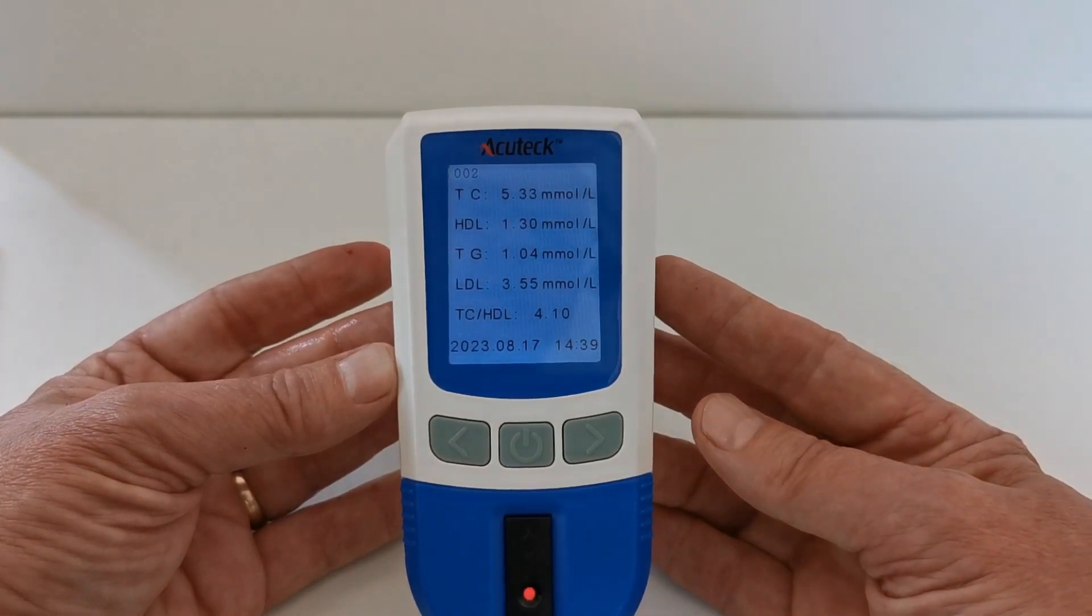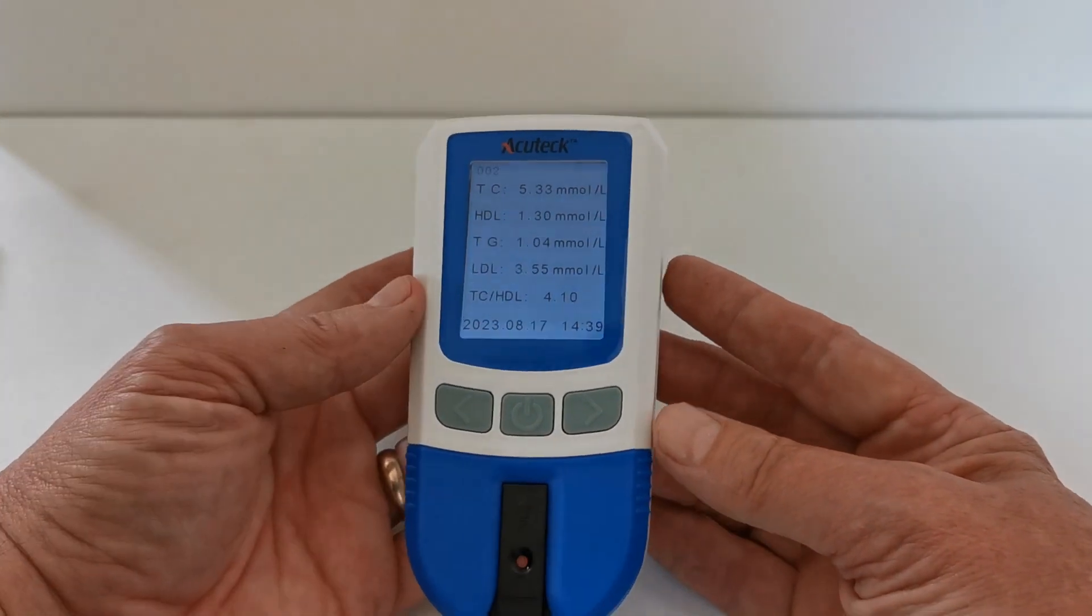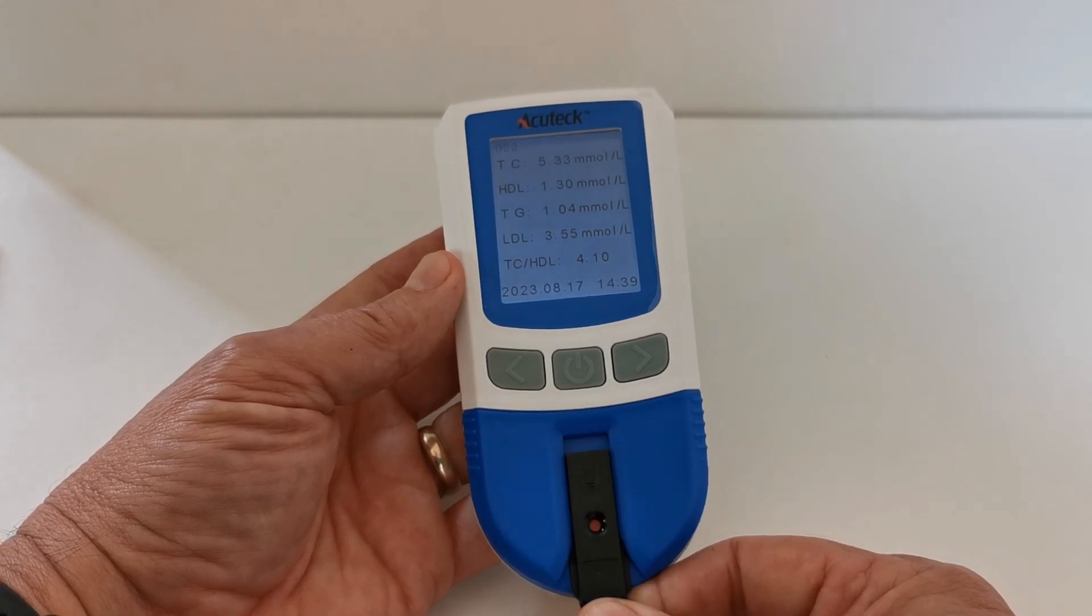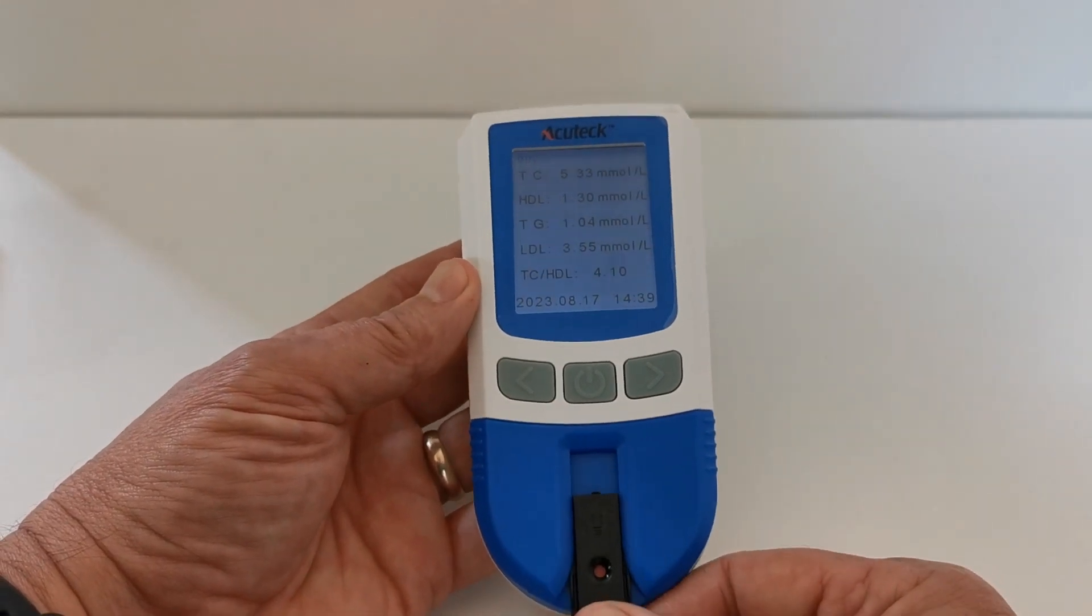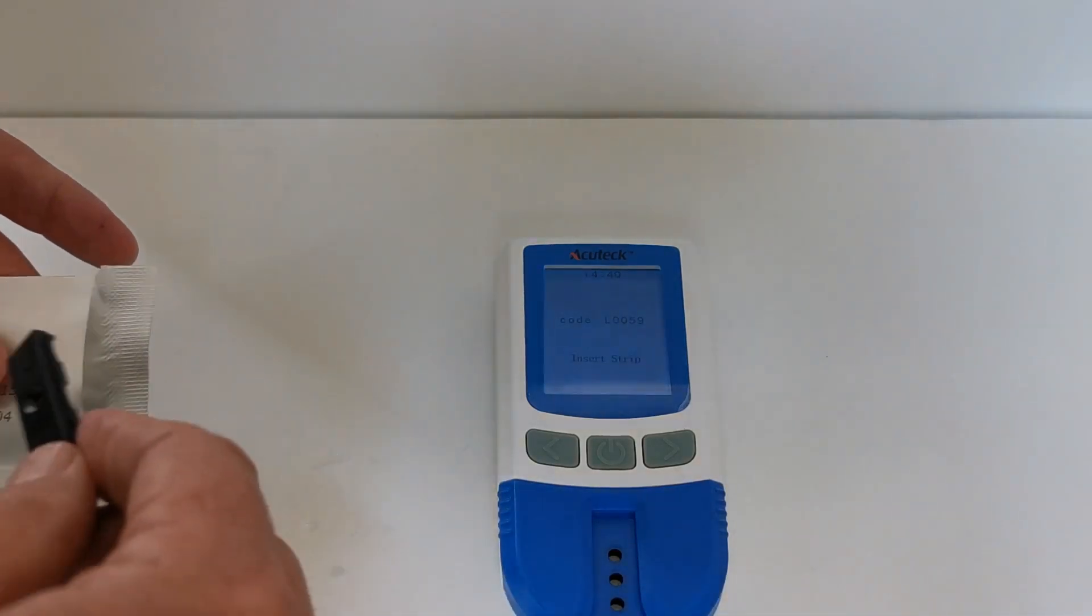Now the meter will automatically power down after 5 minutes. But you can now remove the test device and that can be placed back into its foil for disposal.